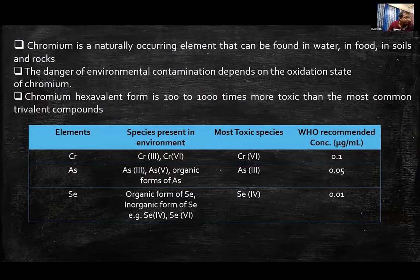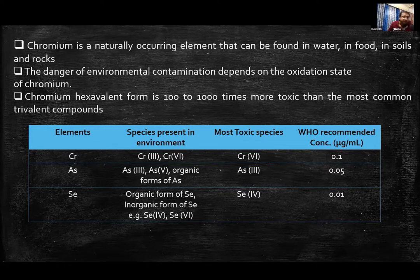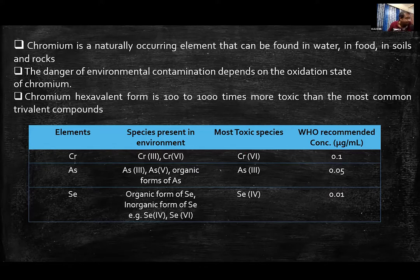As an example, chromium is a naturally occurring element found in environmental samples like water, food, soil, and rocks. A few micrograms of chromium-3 acts as a micronutrient. However, chromium-6 is 100 to 1000 times more toxic than chromium-3, and the WHO recommended limit for chromium-6 in water is 0.1 microgram per mL. Speciation studies are therefore of utmost importance to determine which species are present.